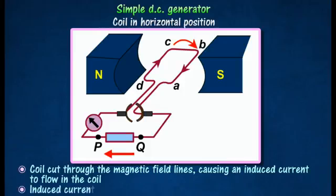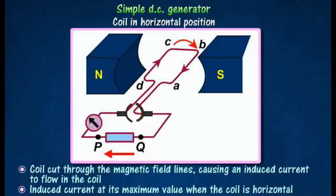The induced current will be at its maximum value when the coil is horizontal. The direction of the induced current is from D to C and from B to A. This causes the current to flow through the external circuit from Q to P.